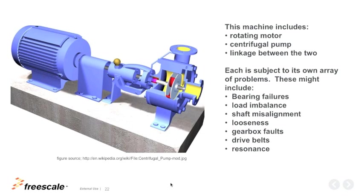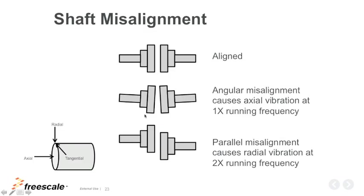A typical production-line machine is composed of a rotating motor, a centrifugal pump, and a linkage between them. Each is subject to bearing failures, load imbalance, shaft misalignment, looseness, gearbox faults, drive belts, and resonance problems. For shaft misalignment: if two shafts are aligned everything works nicely, but angular misalignment produces axial vibration at the running frequency, while parallel misalignment produces vibration at two times the running frequency in spectrum analysis.